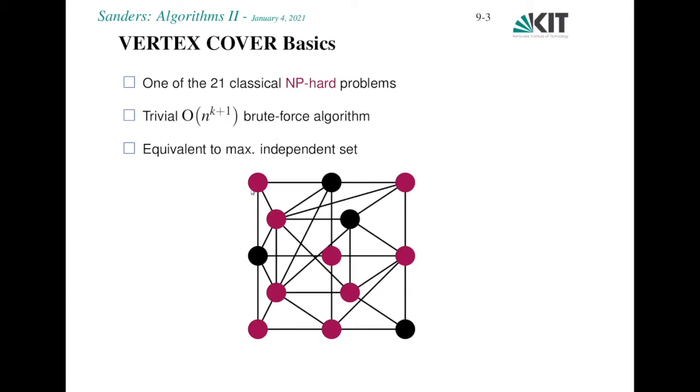Note that the vertex cover problem is equivalent to the maximum independent set problem. If you take the complement of vertex cover, you get an independent set. And if you have a smallest vertex cover, the complement will be a maximum cardinality independent set.